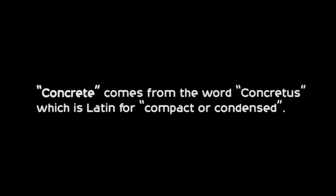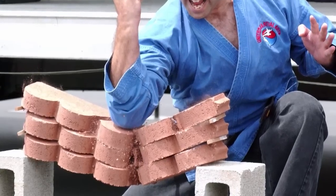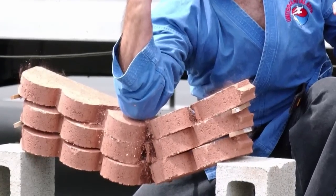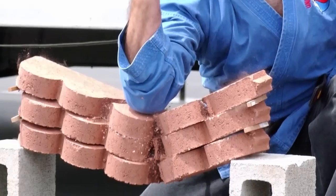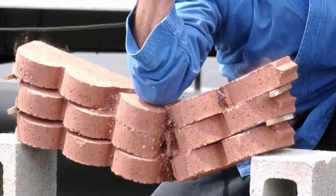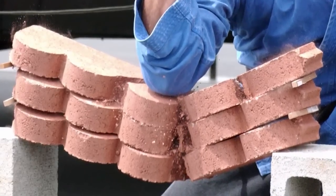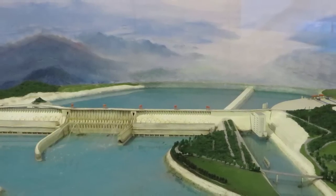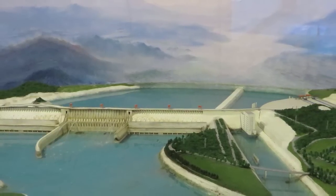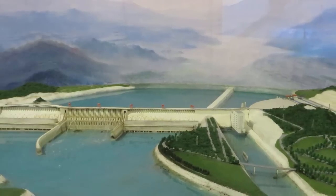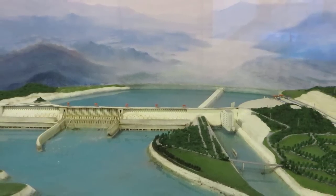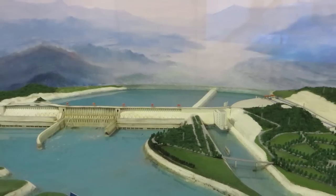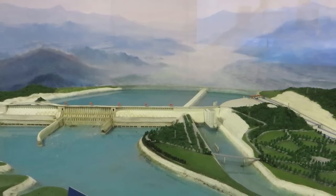Bonus Fact 1: Concrete comes from the word concretus, which is Latin for compact or condensed. Bonus Fact 2: On March 21, 2011, Ed Byrne broke 55 concrete blocks with his bare hands in 4.86 seconds, setting a new world record. The previous record for this same amount of blocks was 17.49 seconds. Bonus Fact 3: The Three Gorges Dam in China is the largest concrete structure in the world, containing 27.2 million cubic meters of concrete. The previous record was held by the Grand Coulee Dam in Washington state at 9 million cubic meters of concrete, which is enough to build an 8-foot-wide sidewalk around the equator of the Earth.